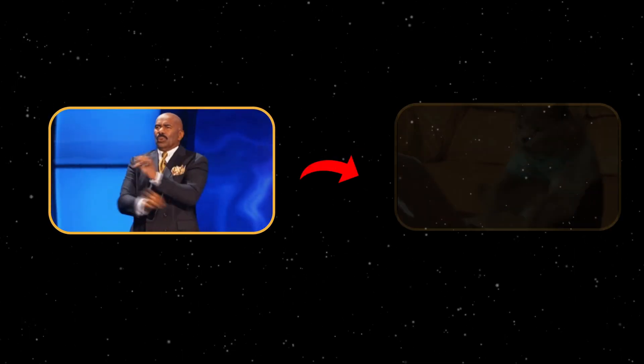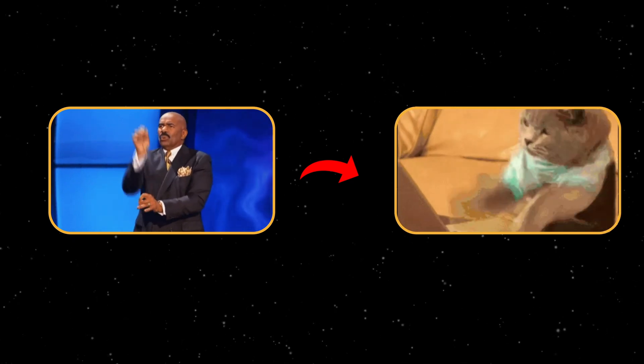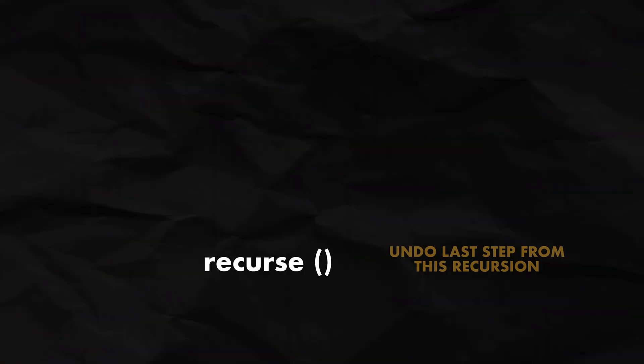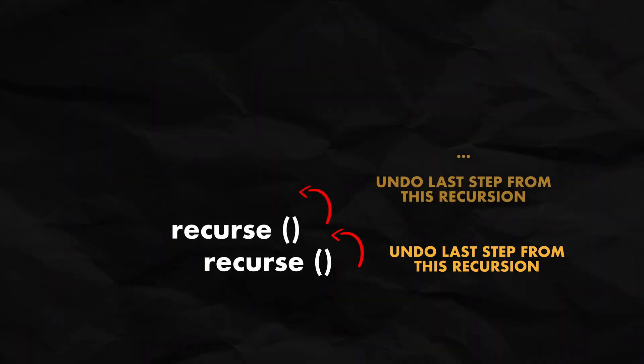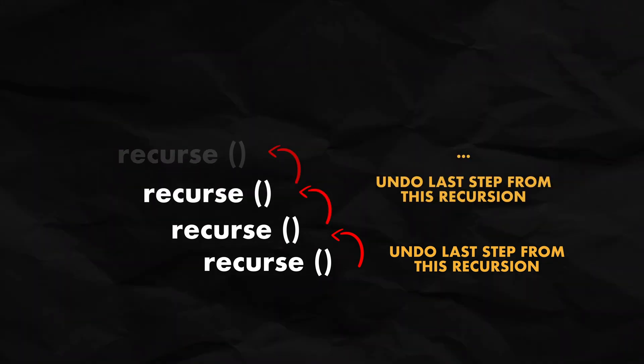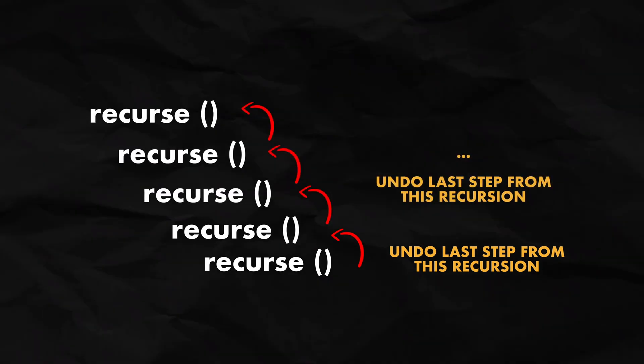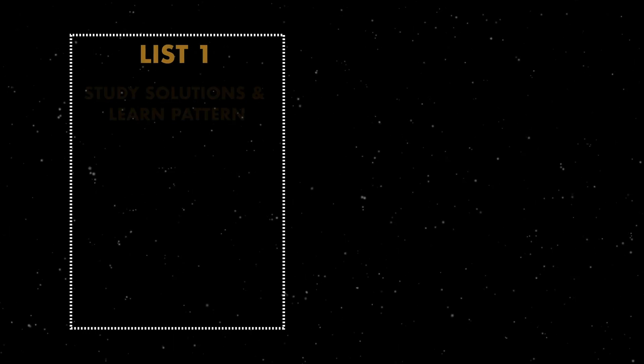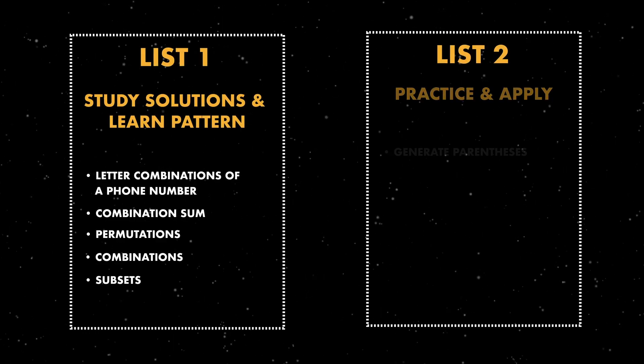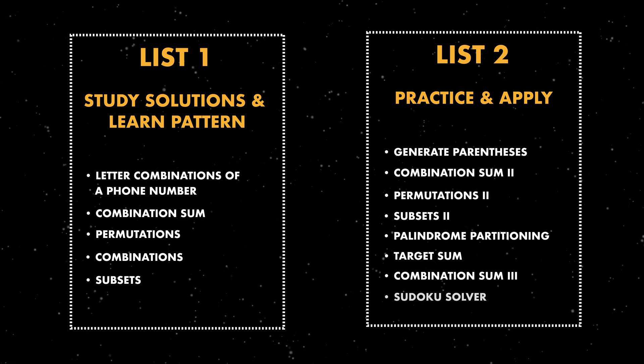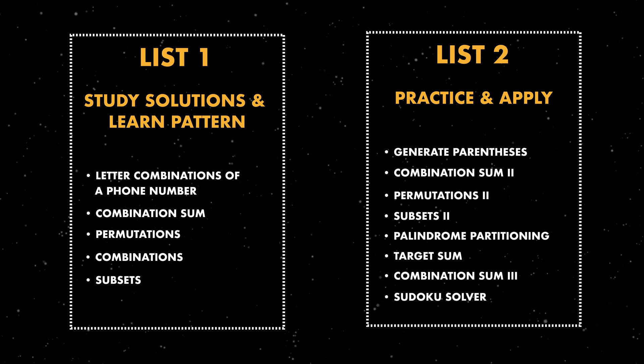Backtracking is just a pattern where the logic after the recursive call brings the current state back to where it was before the call, so we can explore the next set of options. These are the questions for this week — write them down with the recursion and pay attention to what the logic before and after the recursive calls actually does.